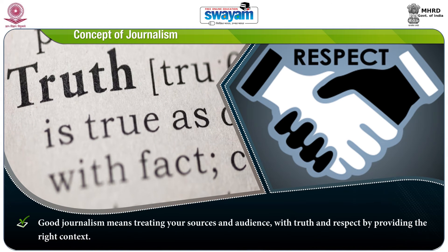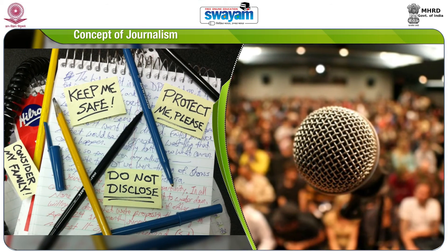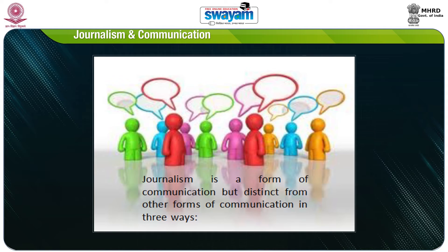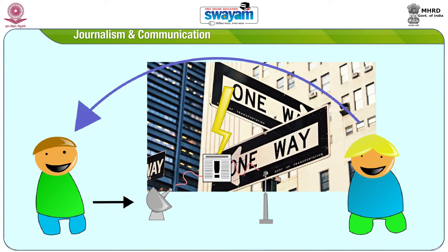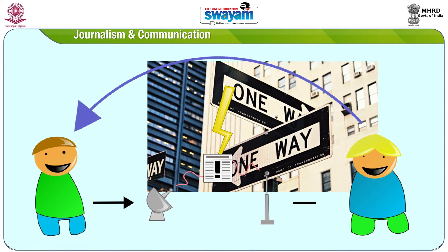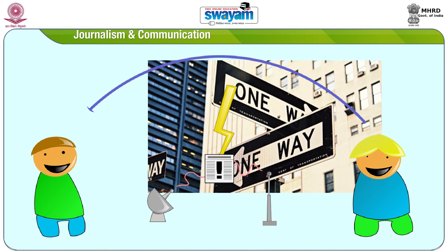Good journalism means treating your sources and audience with truth and respect by providing the right context so people understand the greater truth beyond the information. Journalism is a form of communication, but it is distinct from other forms of communication in three ways. The first difference is that journalism is a one-way message from the journalist to the audience. Yet it is most unique because the message is not just a personal story or subjective facts — the journalist is normally concerned with communicating knowledge of current events or situations, based on his or her observations and discoveries.